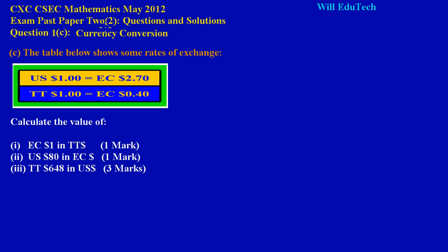In part C of the May 2012 mathematics paper, we are asked to do a little currency conversion. They have given us a table showing rates of exchange: US$1 is equal to EC$2.70, and Trinidadian $1 is equal to EC$0.40.